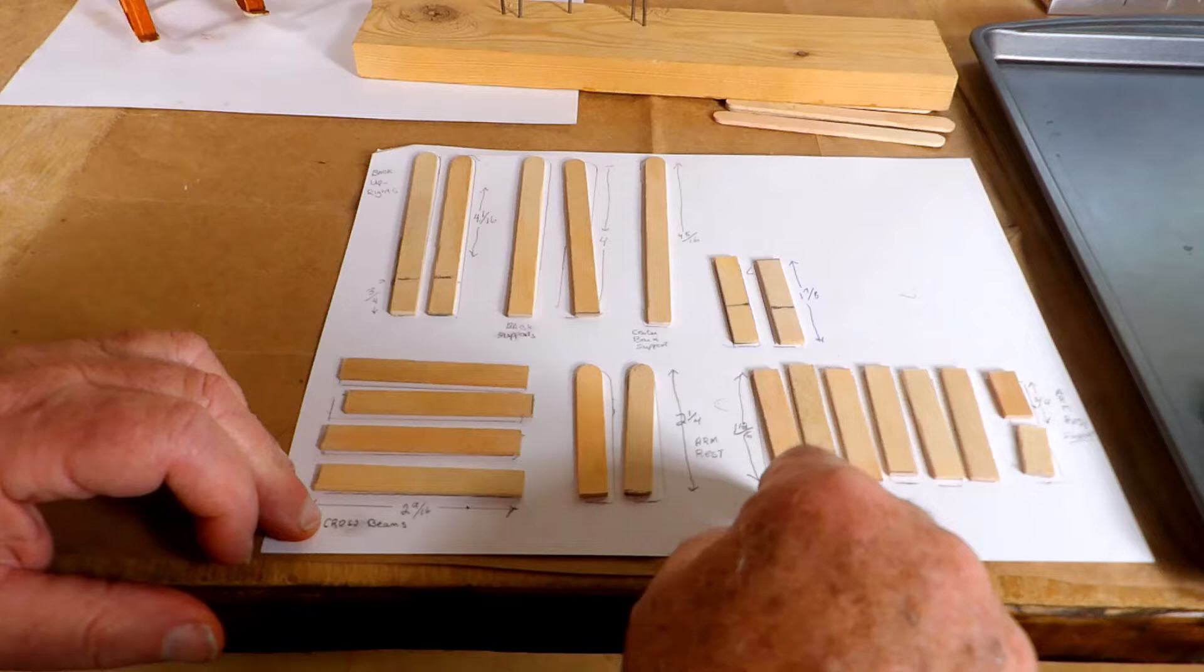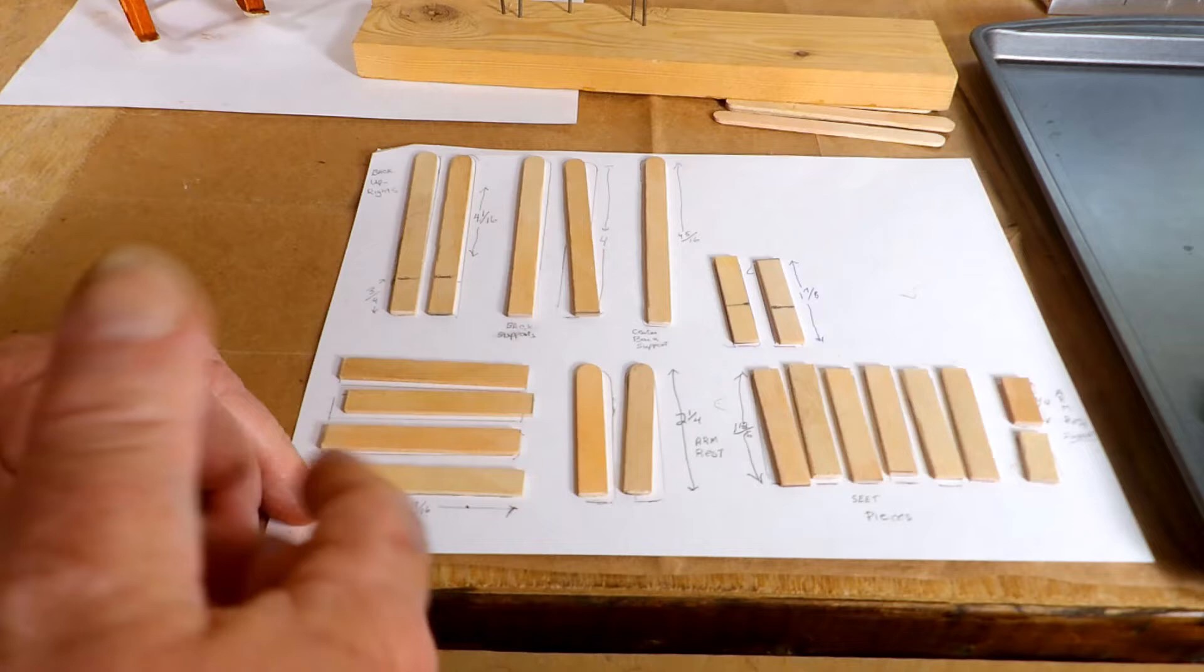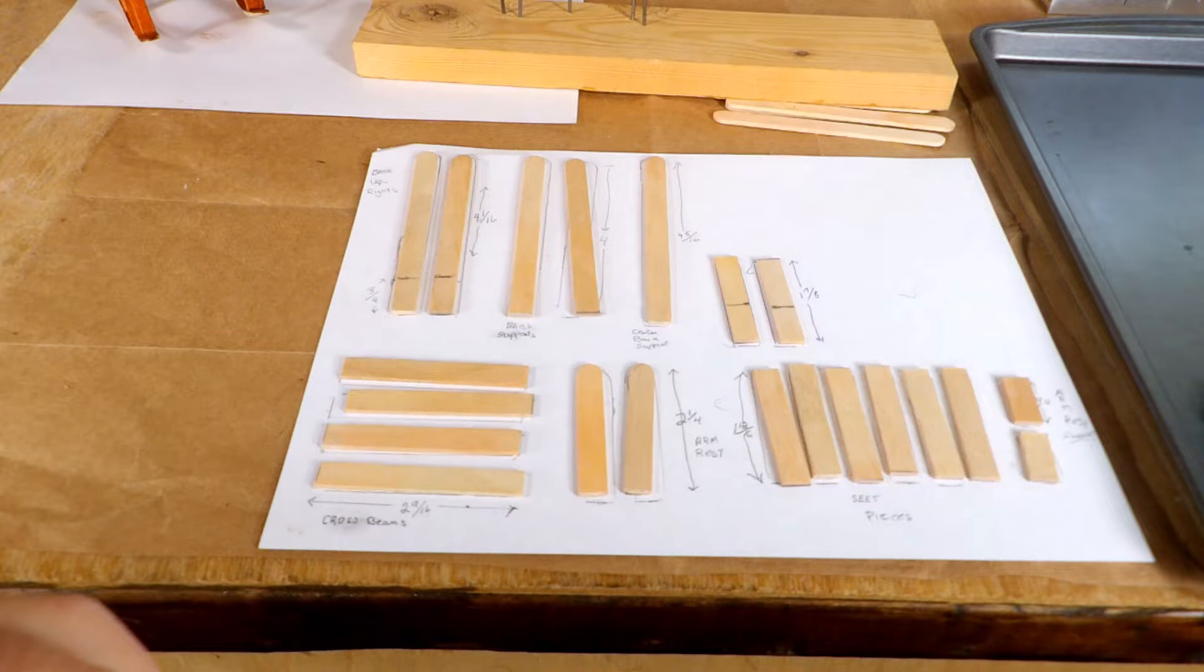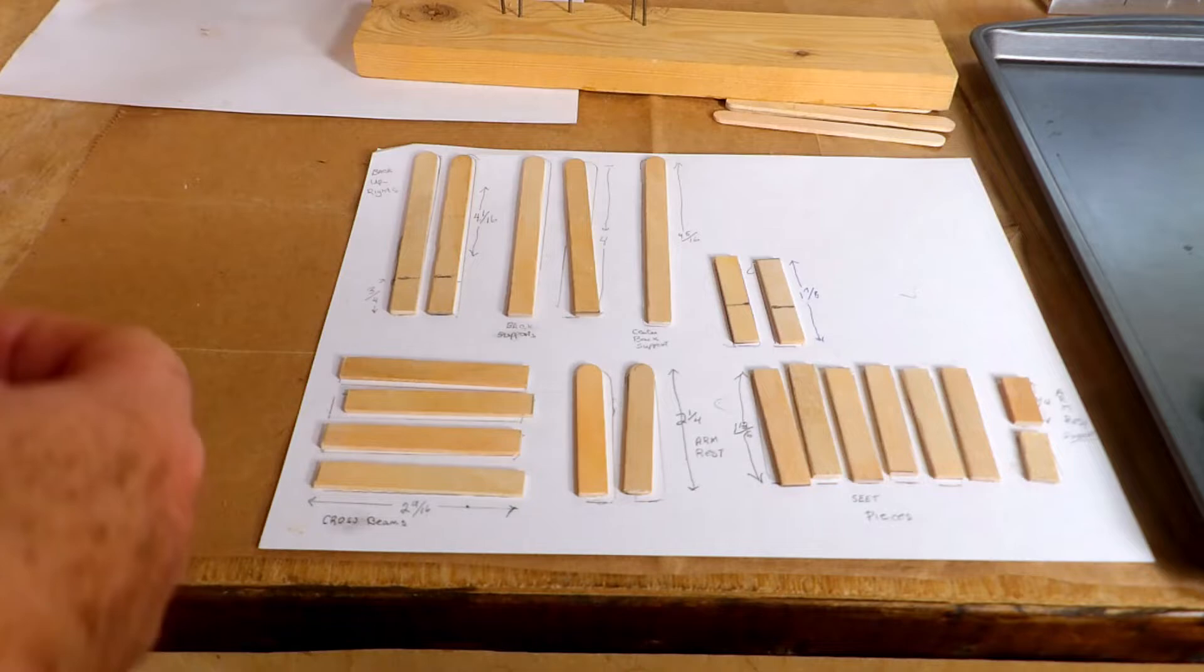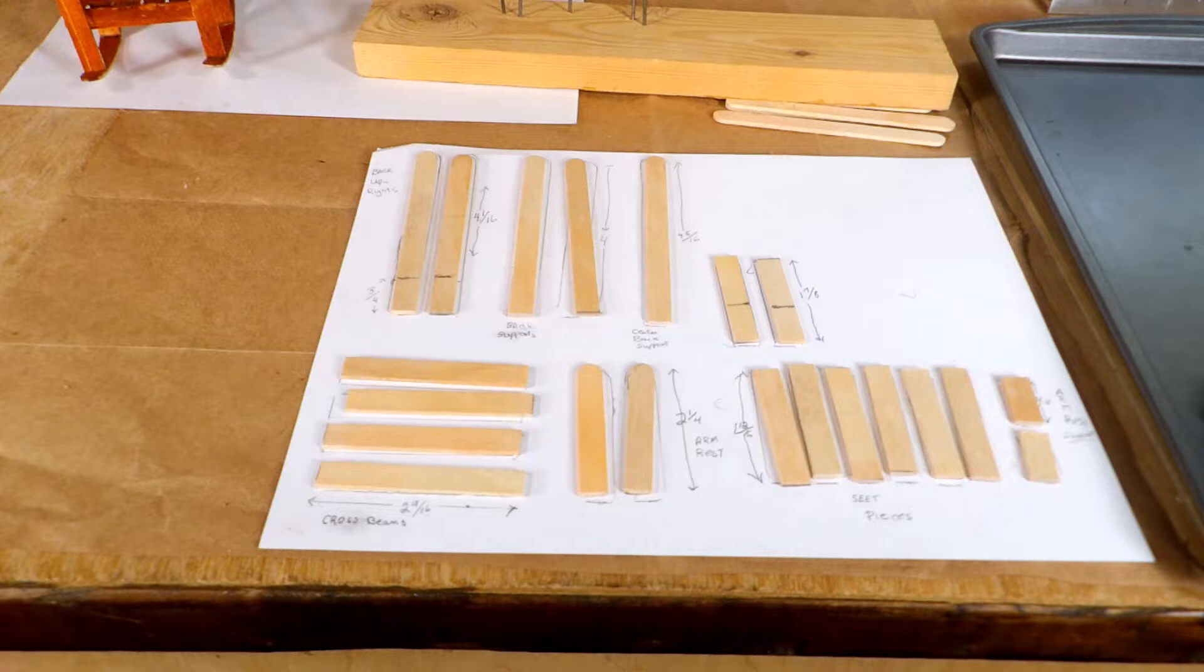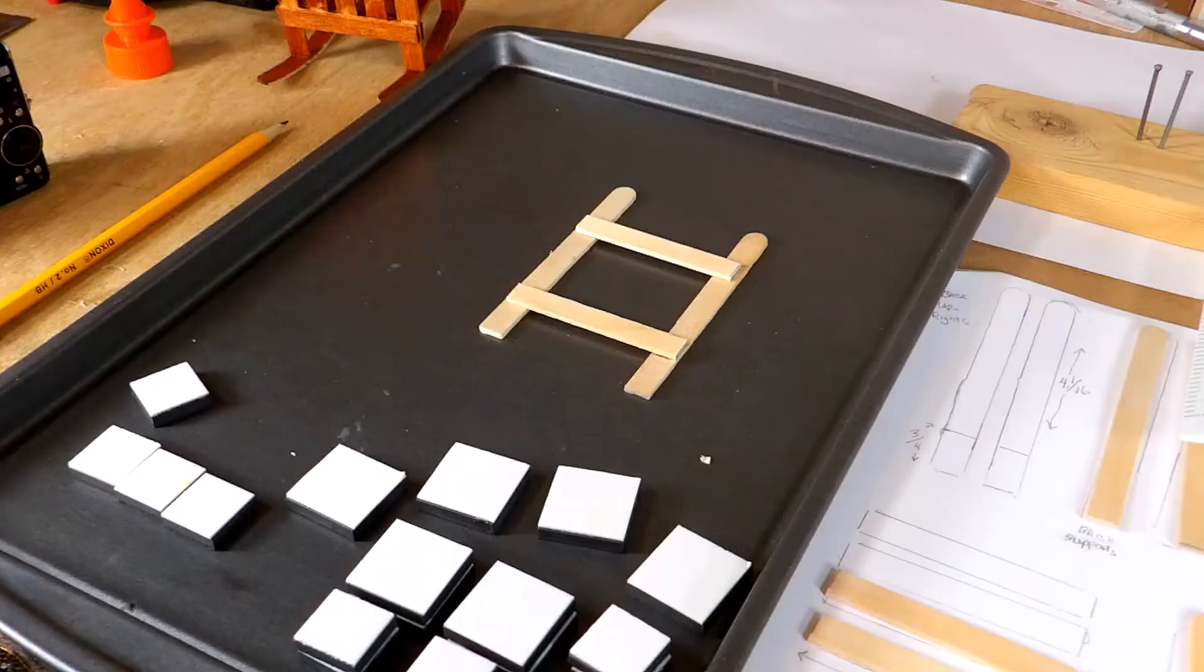These here are one and seven-eighths, and these pieces here are one and thirteen-sixteenths. These are three-fourths, and of course the width is all the same because it's the popsicle stick. So the first thing we're going to do is make the front and back pieces that hold the thing together. I'll be right back when I got those set.